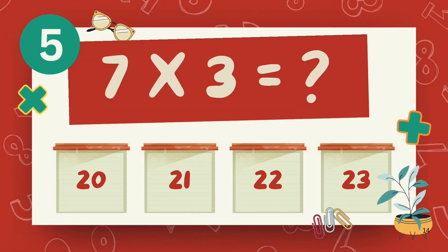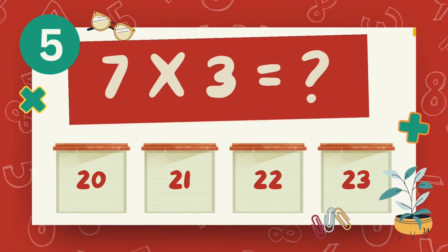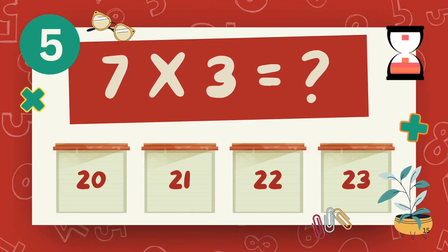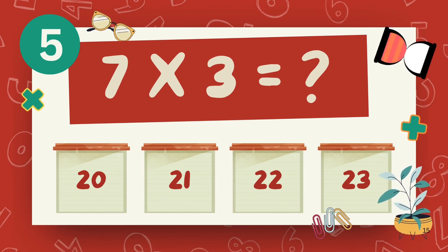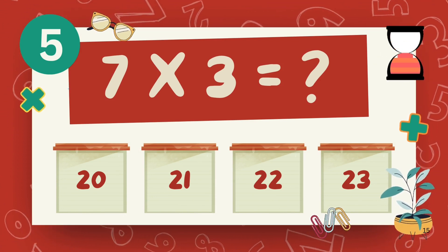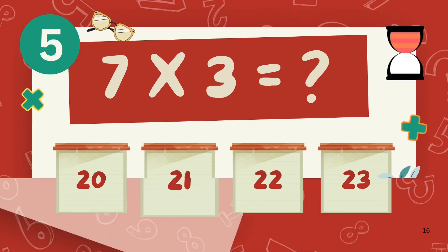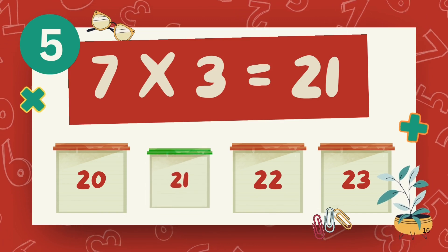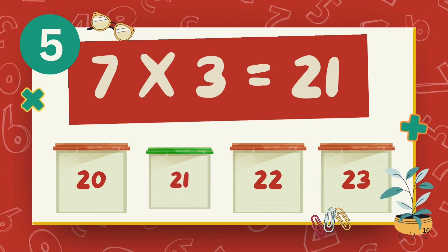What does 7 multiply 3? The answer is 21.